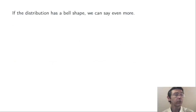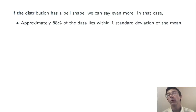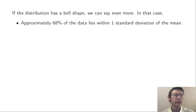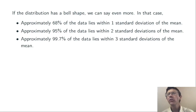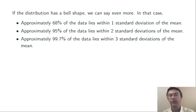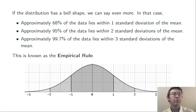Now, if the distribution has a bell shape — a normal distribution — we can say even more. In that case, approximately 68 percent of the data will lie within one standard deviation of the mean, about 95 percent within two standard deviations, and nearly all of it — 99.7 percent — within three standard deviations. This is known as the empirical rule, or sometimes the 68-95-99.7 rule, illustrated here with a smooth arc representing a histogram.